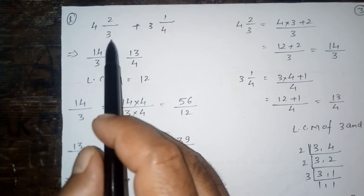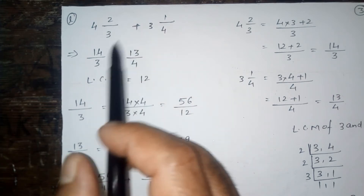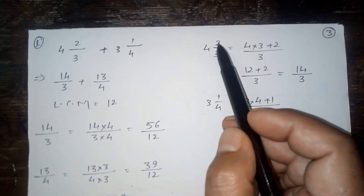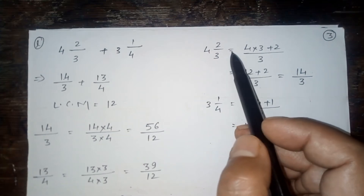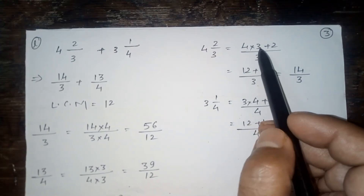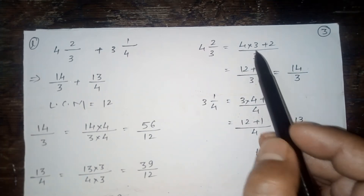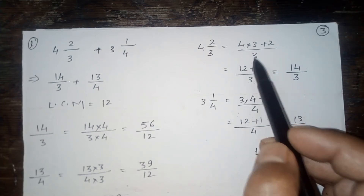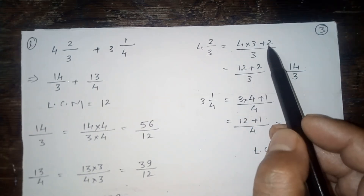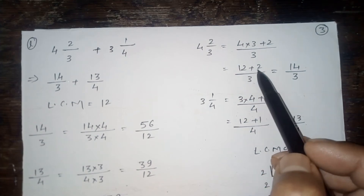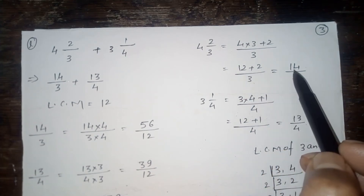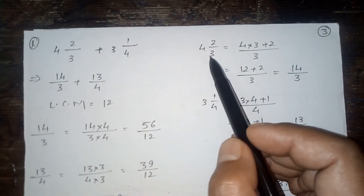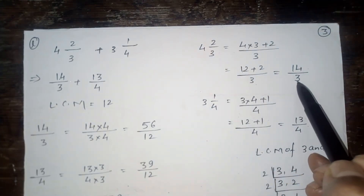So what will you do? First, convert the mixed fraction to an improper fraction. Look here. This is 4 and 2 upon 3, so we take 4 multiplied by 3 plus 2 upon 3. That is 12 plus 2 upon 3, which gives 14 upon 3. Therefore, mixed fraction 4 and 2 upon 3 converts to 14 upon 3.